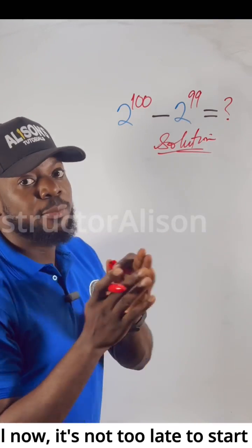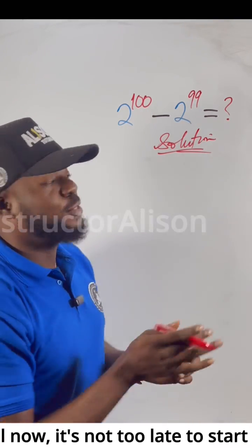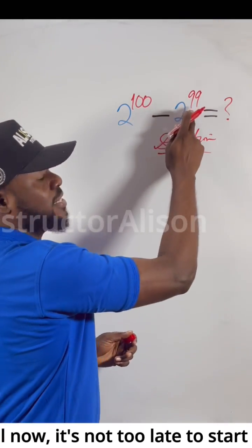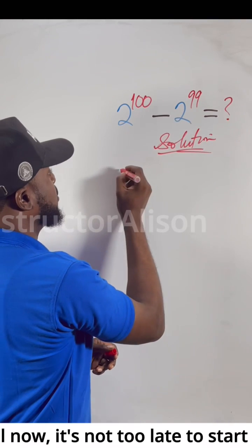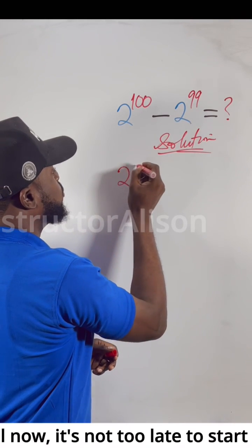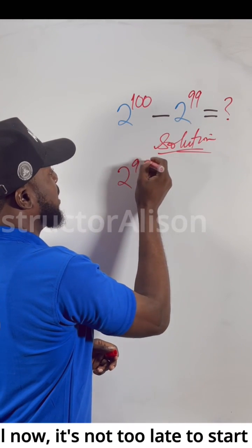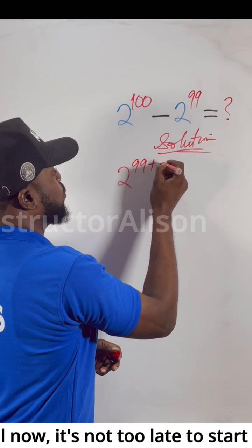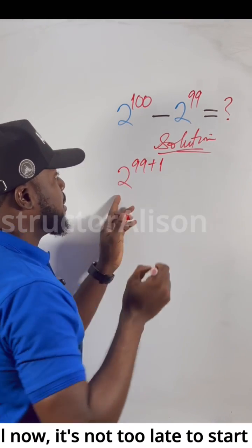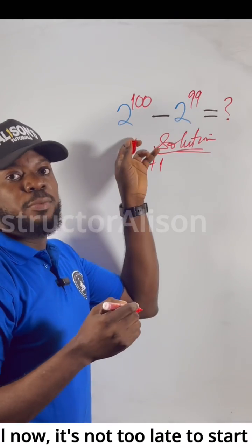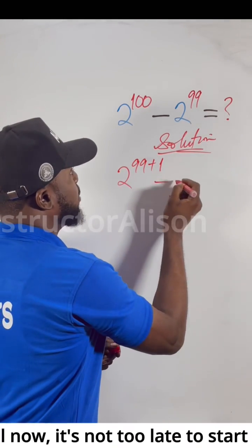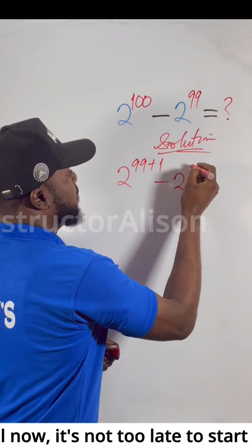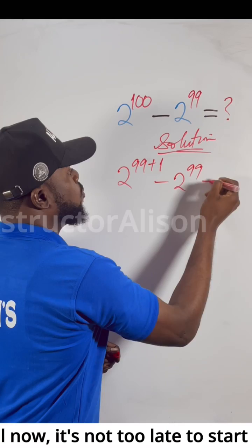After all, 99 plus 1 is 100. We have 99 here, so we want something similar to this. 2 to the power of 99 plus 1 is the same thing as saying 2 to the power of 100. Does that make sense? Alright, minus 2 to the power of 99.